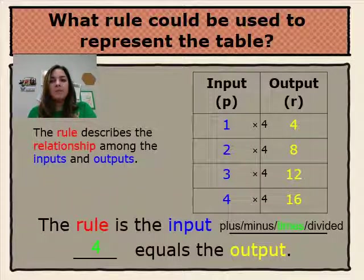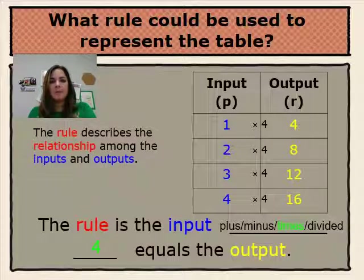Because 1 times 4 is 4, 2 times 4 equals 8, 3 times 4 equals 12, and 4 times 4 equals 16.